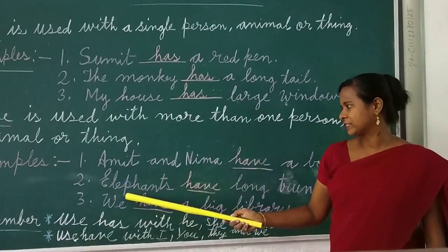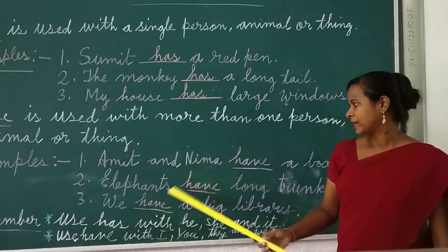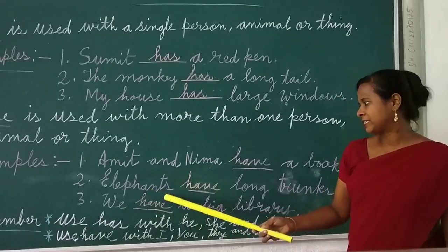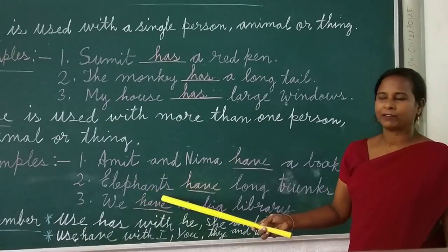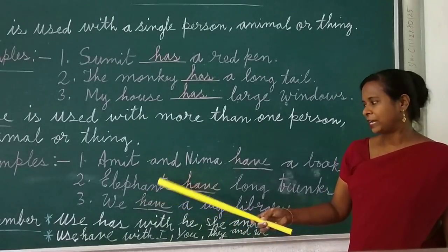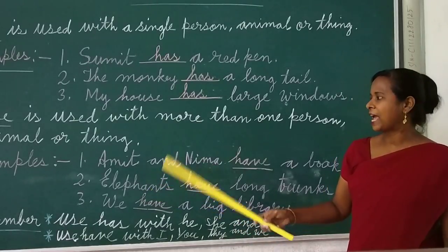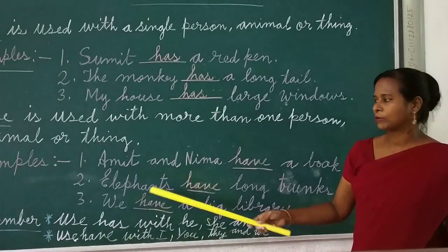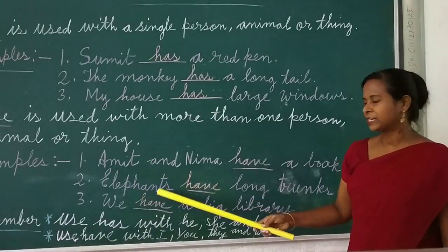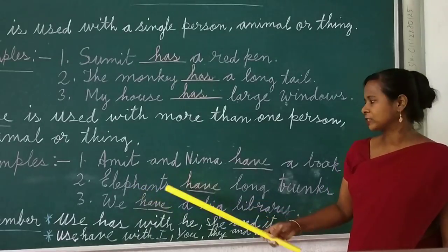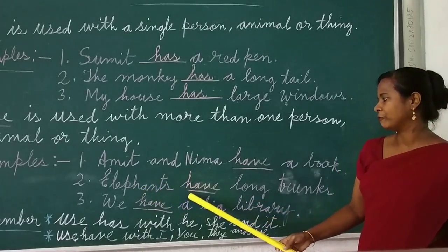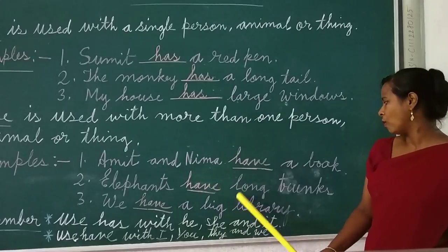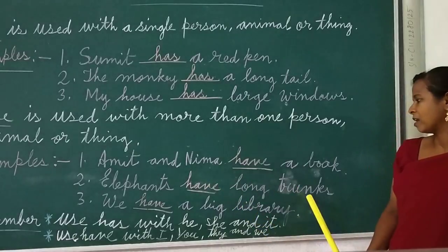Next one: Elephants — with an 's'. Elephants, not elephant. If it were just 'elephant', we would use 'has'. But here it is 'elephants', so: elephants have long trunks.